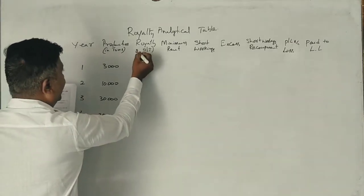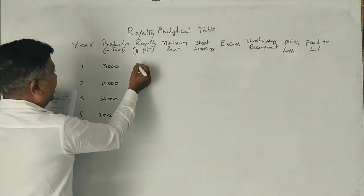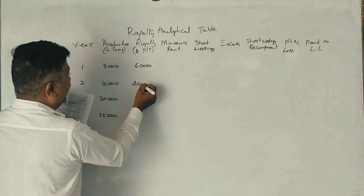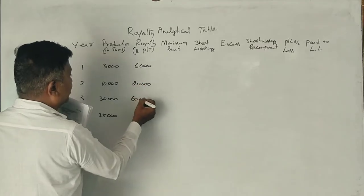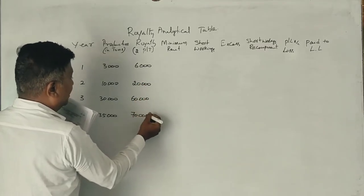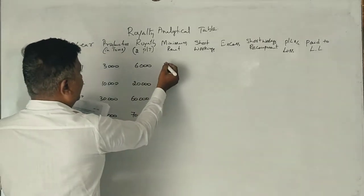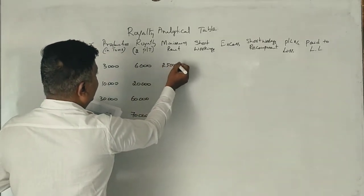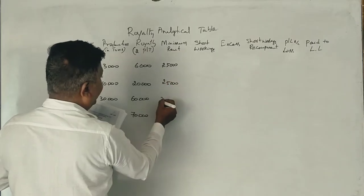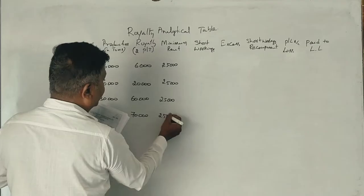The royalty rate is ₹2.10 per ton. Output figures: 22,000 tons and 60,000 tons. Minimum rent is ₹25,000 for each of the four years — ₹25,000, ₹25,000, ₹25,000, and ₹25,000.